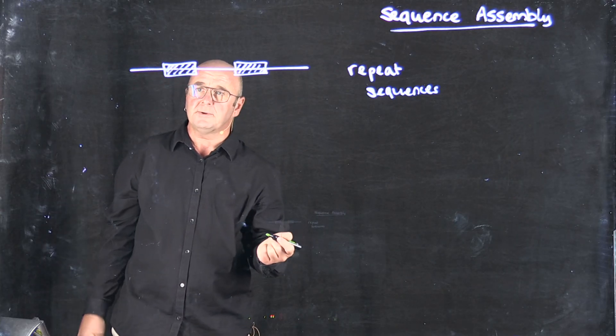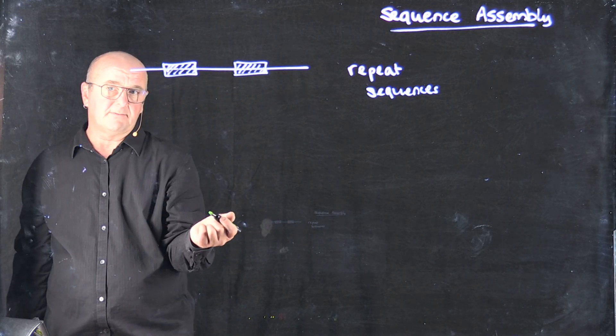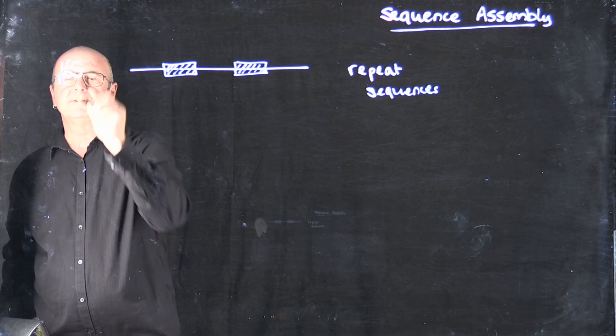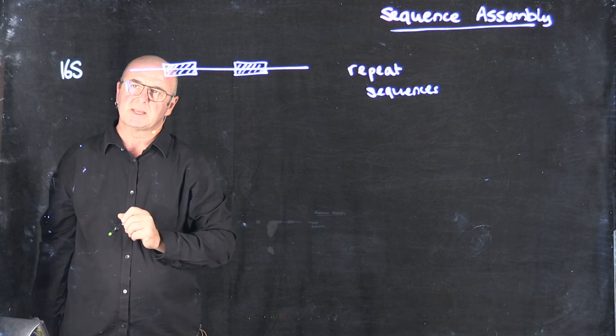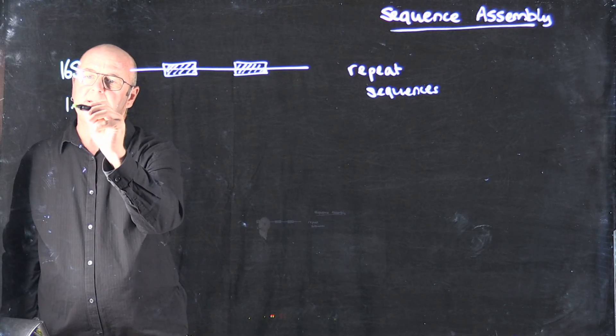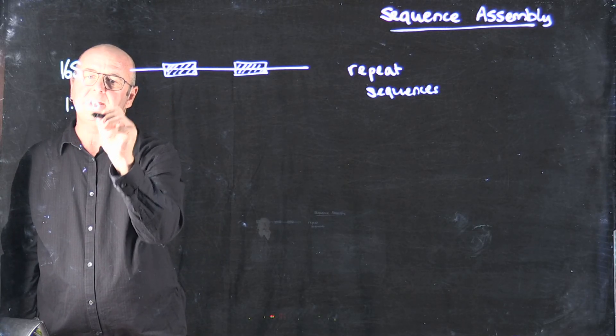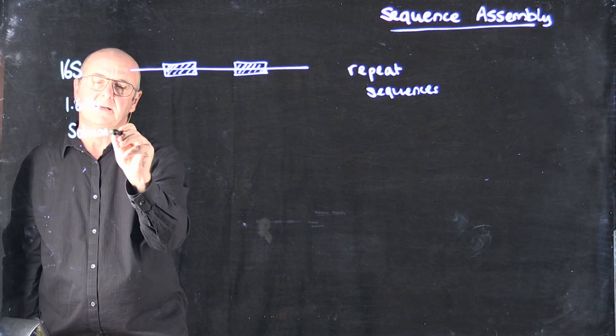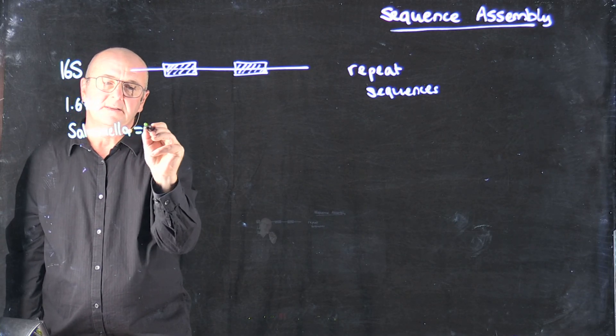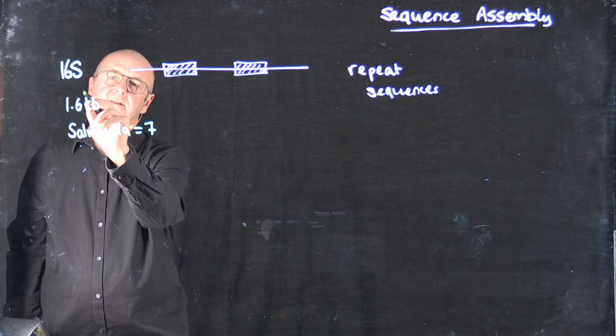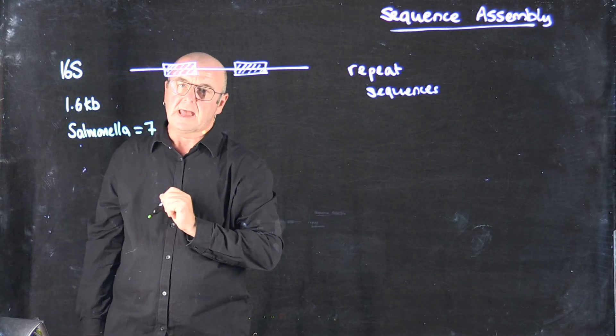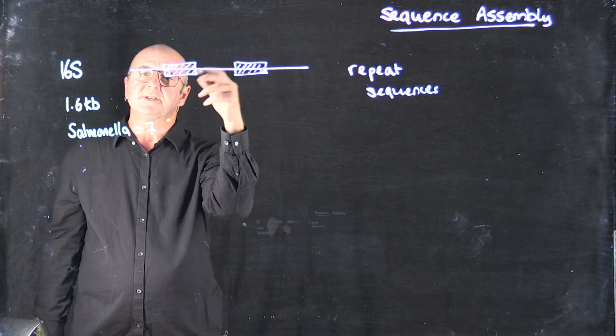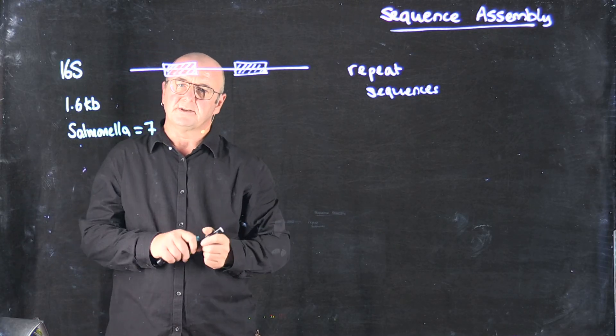So for example, one of the repeats that often causes problems is a gene you may have heard of. It's called the 16S gene. In E. coli and Salmonella, this is about 1.6 kilobases, and Salmonella has in fact seven 16S genes. And to make matters worse, when you actually grow Salmonella, it can switch its DNA around based on those locations.